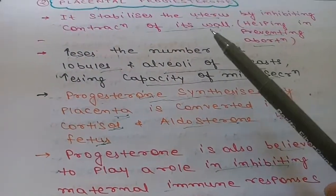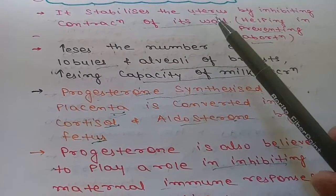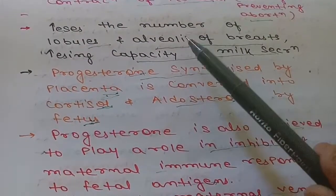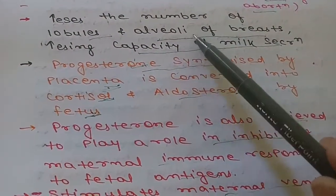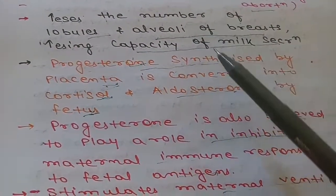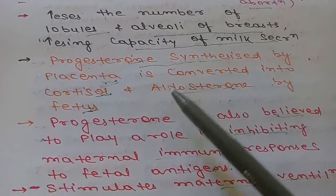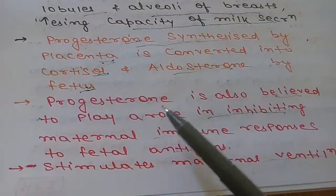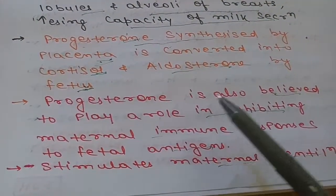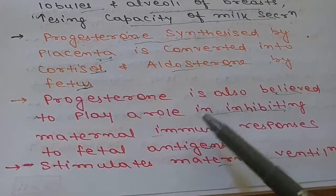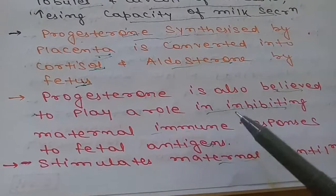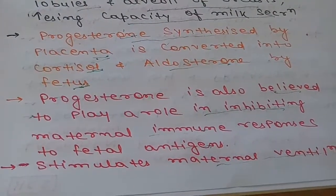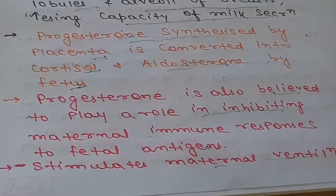To summarize, the five functions of placental progesterone are: first, it stabilizes the uterus; second, it increases lobules and alveoli of the breast; third, it supports cortisol and aldosterone synthesis in the fetus; fourth, it is believed to inhibit maternal immune responses to fetal antigens; and fifth, it stimulates maternal ventilation.